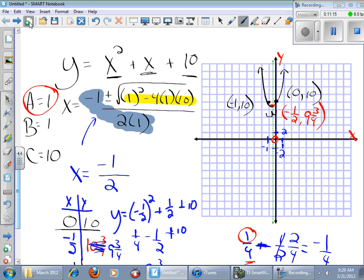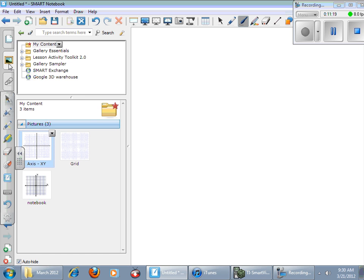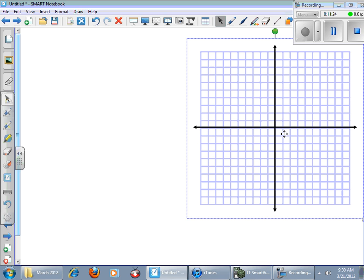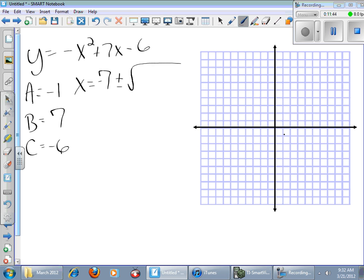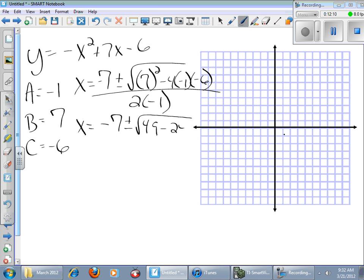I'm going to do one more example here. In this one, I'm going to look for A, B, C. It's easy as negative 1, 7, negative 6. Now I'll go zero hunting. Negative 7 plus or minus the square root of 7 squared minus 4 times A times C, which is negative 6. The whole thing is going to be divided by 2 times negative 1. Plus or minus I'm going to get 49 and then I'm going to get minus 24.